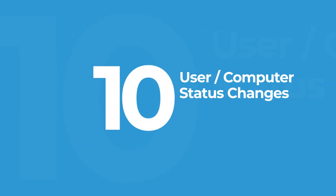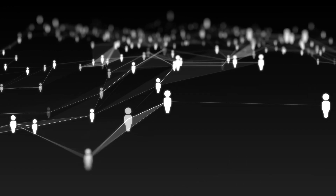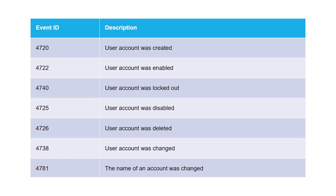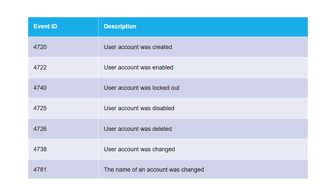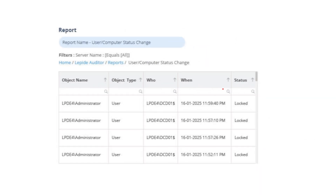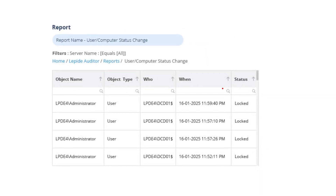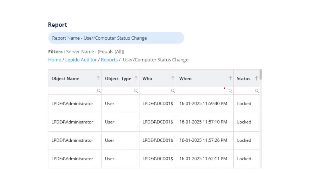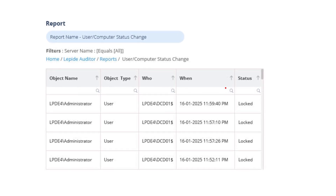User and computer status changes. User accounts don't stay the same forever — they get created, deleted, locked, renamed, or modified. Keeping track of these changes is essential for both security and compliance. Lapide's report shows you exactly what changed, who changed it, and when, all in one simple view.